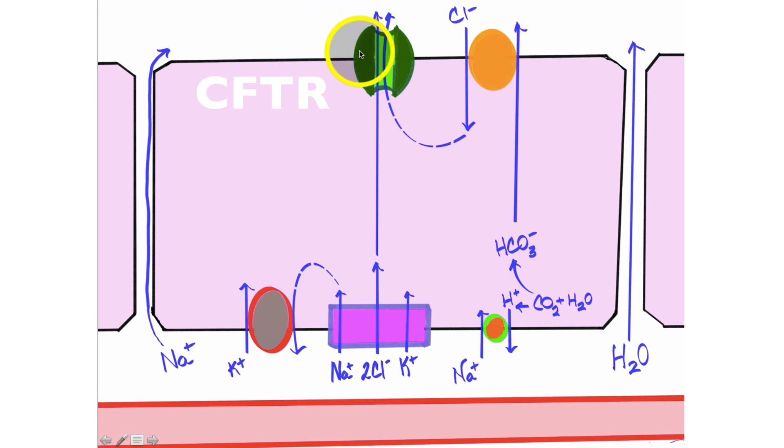But in the absence of this channel, which happens with individuals with cystic fibrosis, once again, we get this stagnant mucus because if this channel is not here, we don't get chloride moving into the lumen. If we don't get chloride moving into the lumen, we don't get sodium moving into the lumen because sodium wants to go where that negative charge is. And if we don't have the buildup of all of those solutes or ions, there's no incentive for water to move into the lumen.